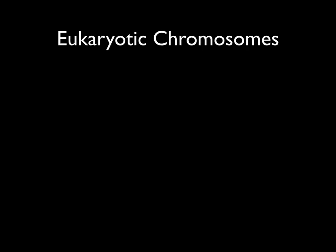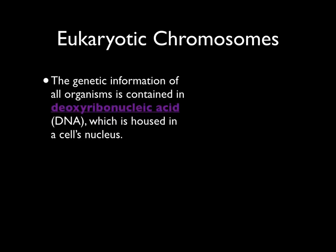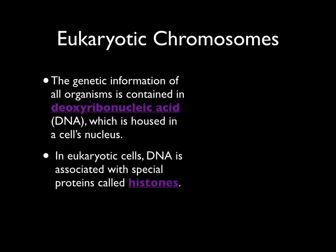Last week we talked in detail about DNA. You should remember that DNA, or deoxyribonucleic acid, is the genetic information of all organisms, and that DNA is housed in the cell's nucleus. Because our cells are eukaryotic, the genes associated with them have a very unique arrangement, and the same is true of eukaryotic chromosomes. In eukaryotic cells, DNA is associated with special proteins called histones, and it's those histone proteins that allow DNA to condense to form a chromosome.